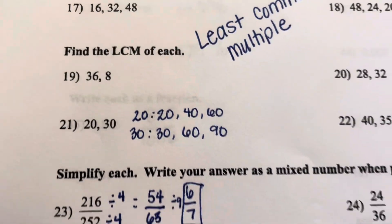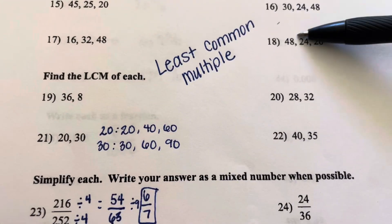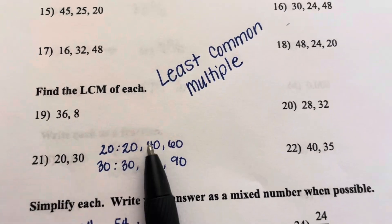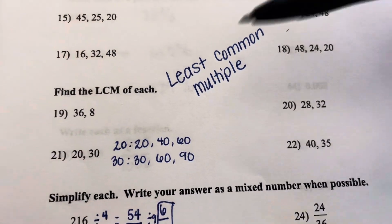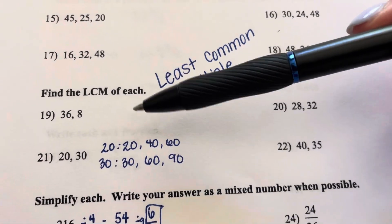When I come to least common multiple, I do something different. I look at the numbers and I look at what the skip counting would be of these numbers. What are the multiples?